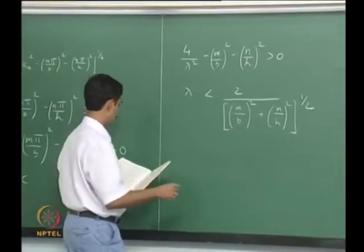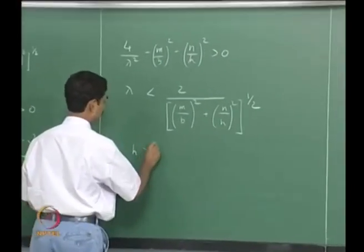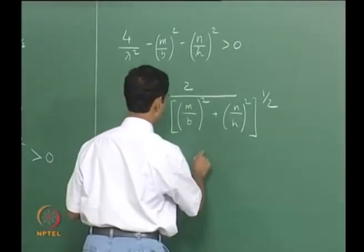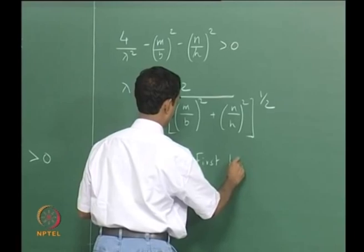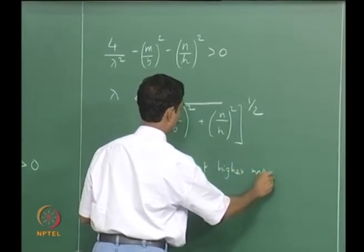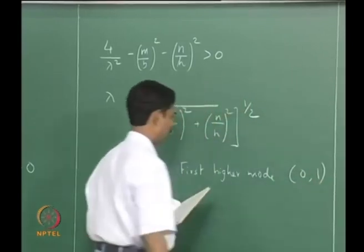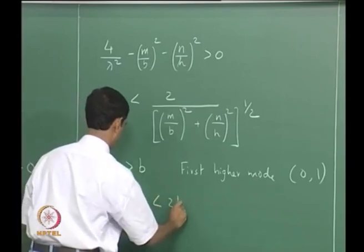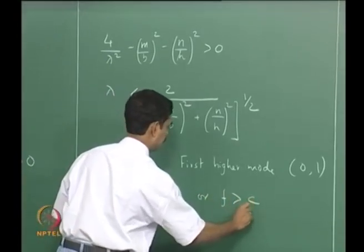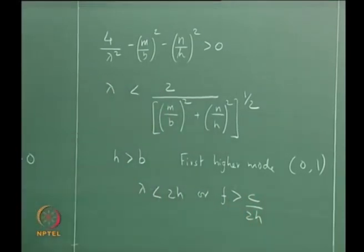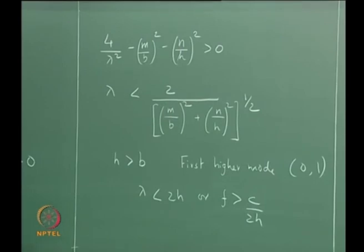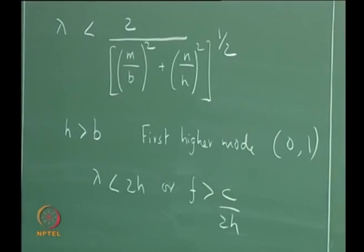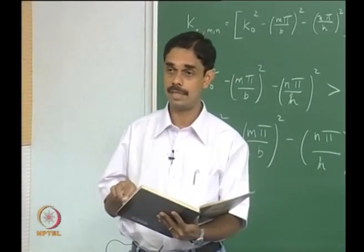If h > b, the first higher mode will be (0,1). So you should get λ < 2h, or equivalently f > c/(2h). If you do not satisfy this relation, you will not be able to set up higher modes in the duct — those modes will be very local and the amplitude will decay exponentially.